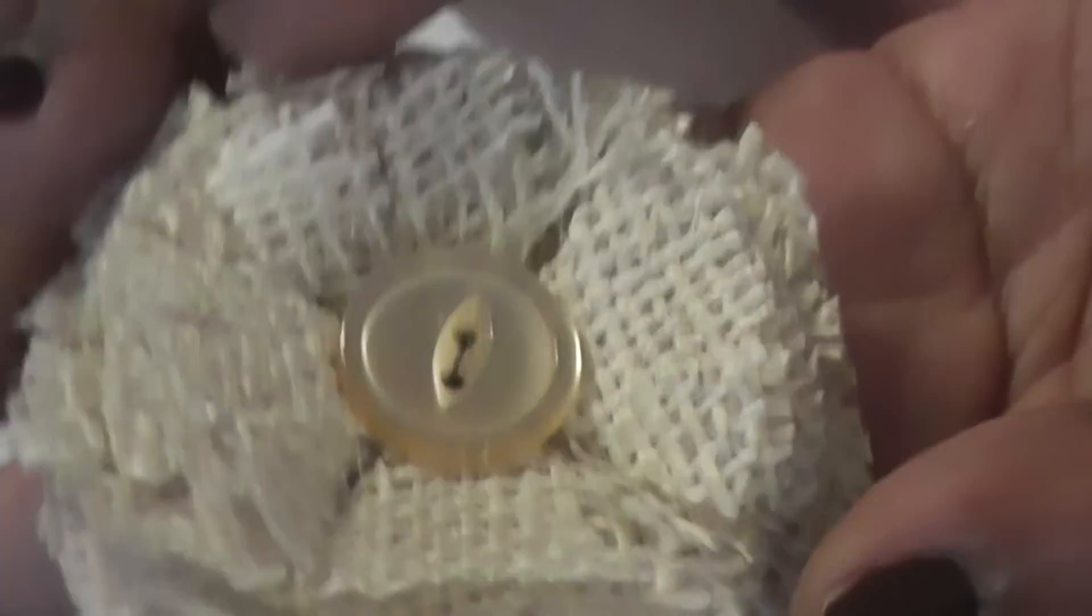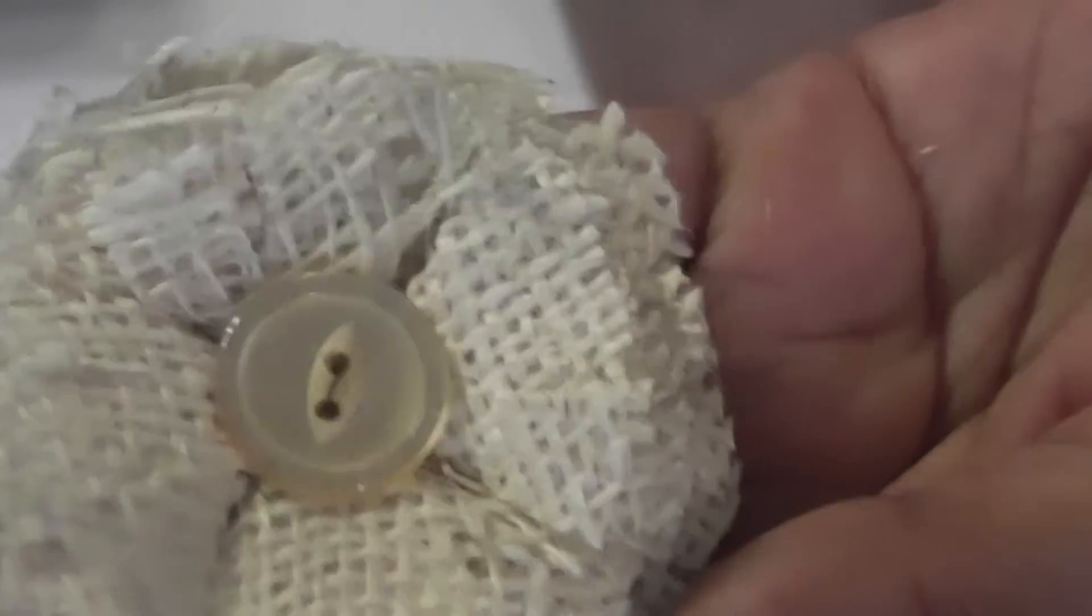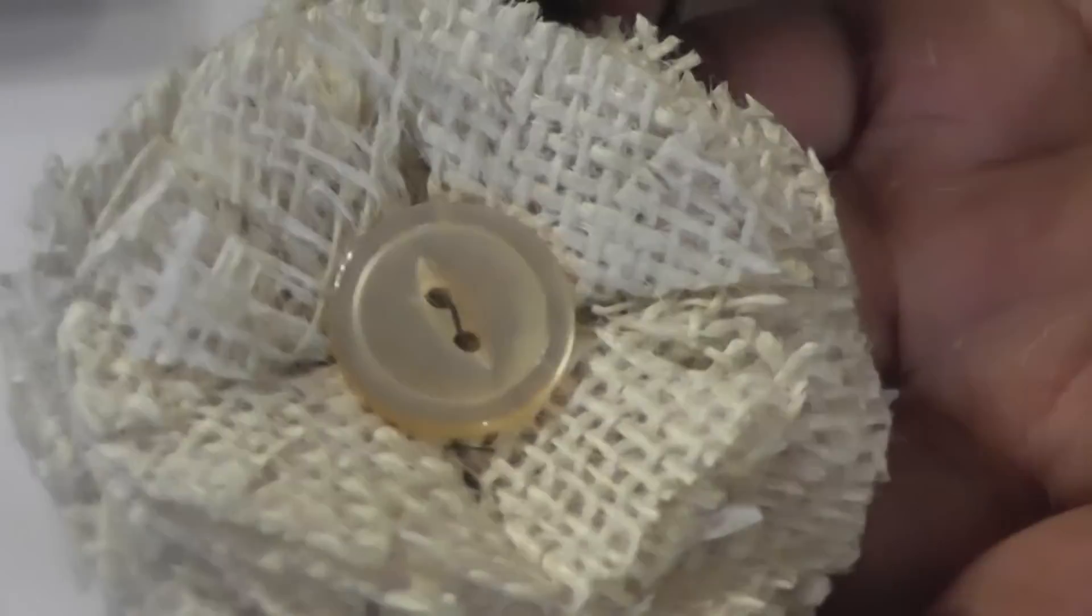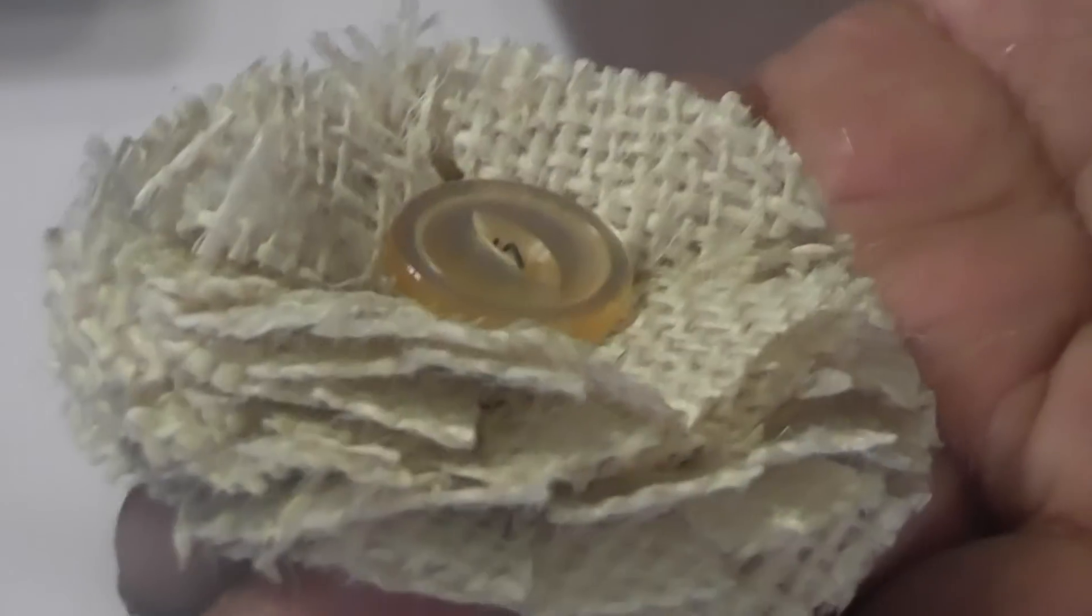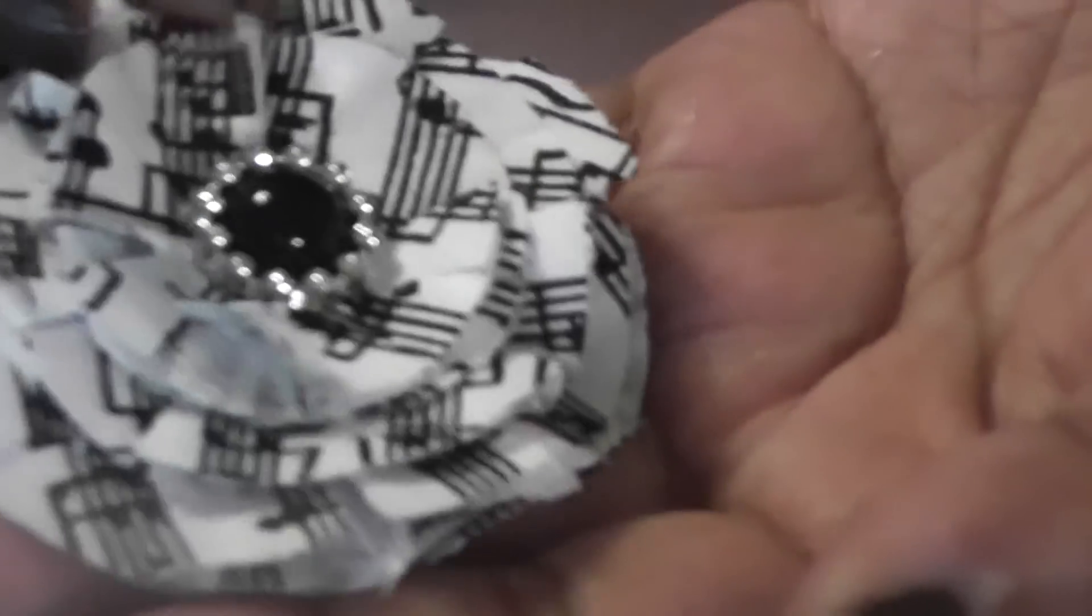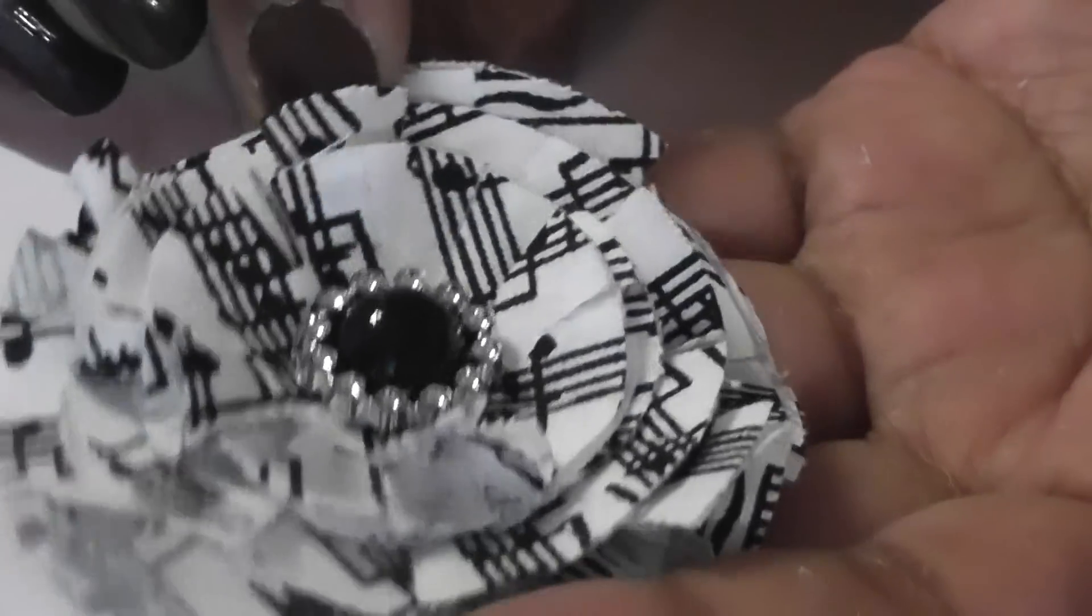And then this one was using burlap material. Not really crazy about this one. It's great for a fall layout or a masculine card maybe, but it falls apart easily. So I really don't recommend the burlap unless you have some kind of fixative or something where you can stabilize the material. And then this one was using the music note fabric that Karen sent me. Thank you, Karen.